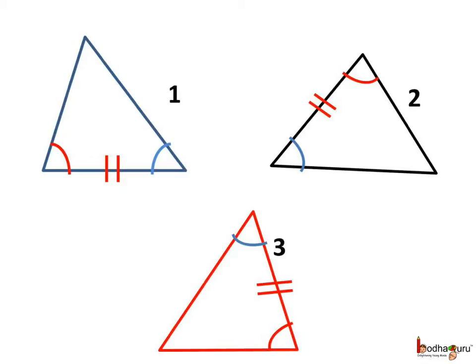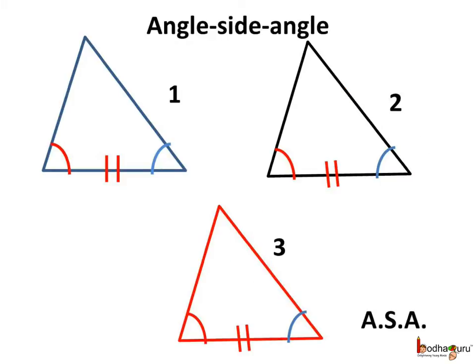They are looking different, but if we just rotate triangle 2 and triangle 3 — look, all three triangles are identical. That is, they are congruent. So, if two angles and the common arm of the two angles are equal to the two corresponding angles and side of another triangle, then the triangles are congruent.